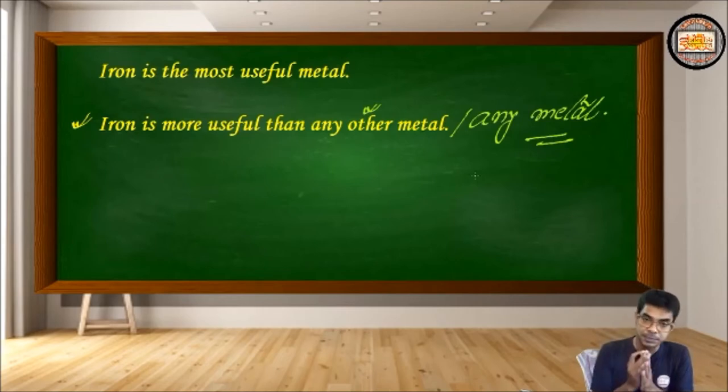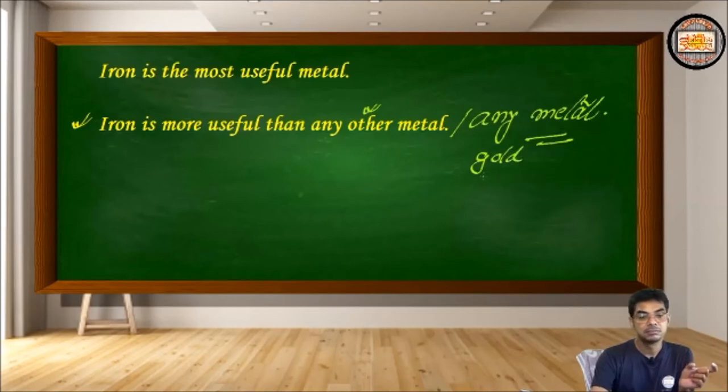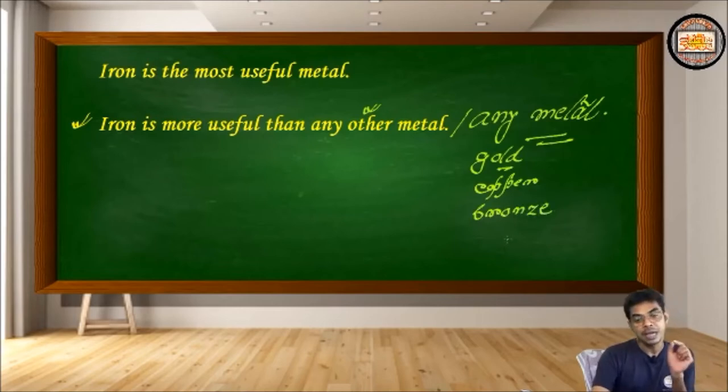So what happens when we write down any metal? There comes iron, there comes say gold. So we are first considering iron is more useful than gold. Okay. Then iron is more useful than copper. Then comes iron is more useful than bronze. So we have to consider each and every metal. And at one point would consider iron is more useful than iron.